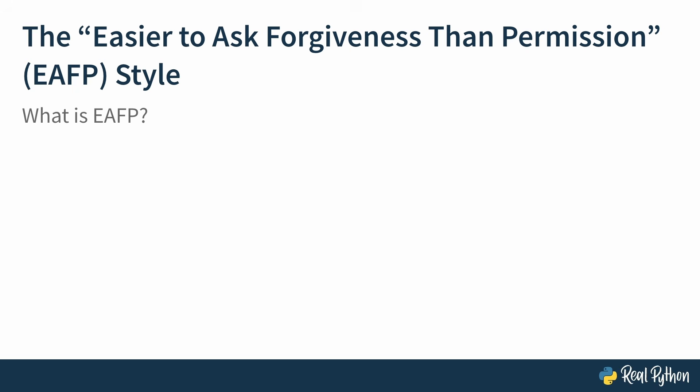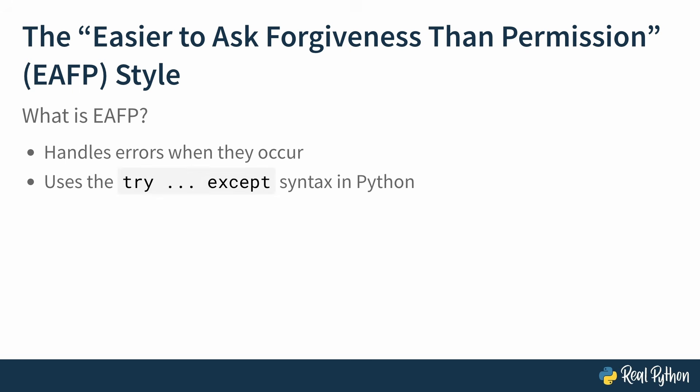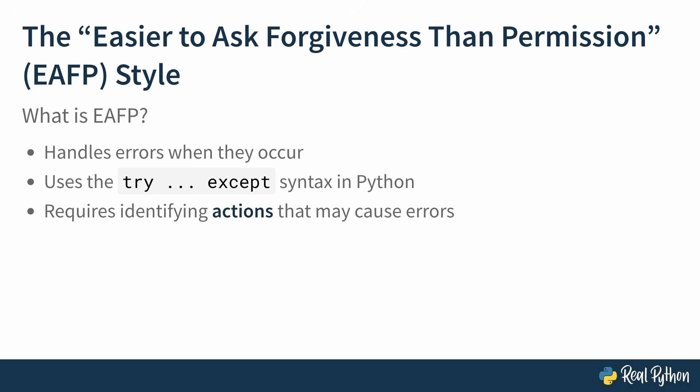So how does this apply to code? With EAFP, we'll be handling errors when they occur. You'll do this using the Python try-except syntax, which allows you to catch an error after it happens. To apply EAFP well, you'll have to identify the actions you may take that could cause errors. Now let's go back to the REPL for another example.